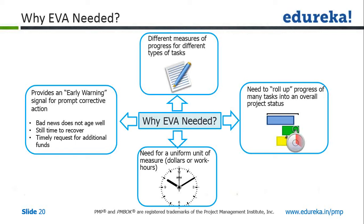So you need to create certain checkpoints in your project, and at each checkpoint you have to do the health check so that you can take corrective actions or preventive actions. If you see that your project is giving some signals that it may derail, or the time you're spending on the project is more than what you planned for, it gives you enough time to take those actions.